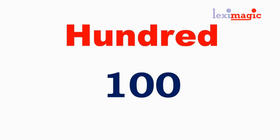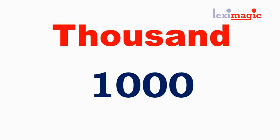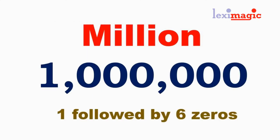We start with 100, which is one followed by two zeros. Then we have 1,000, which is one followed by three zeros. Then we come to a million, which is one followed by six zeros, or a thousand thousands.